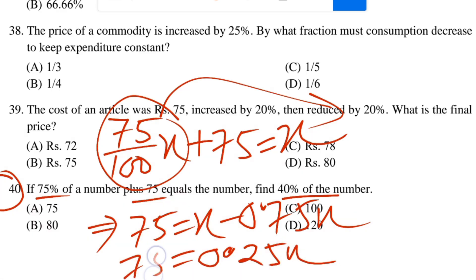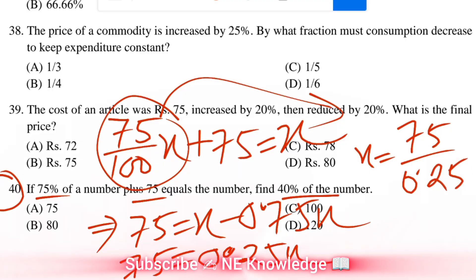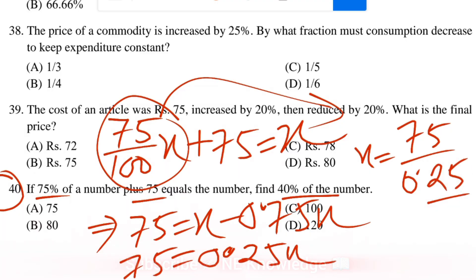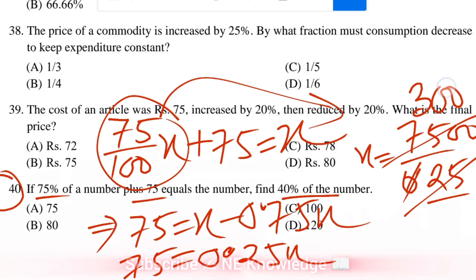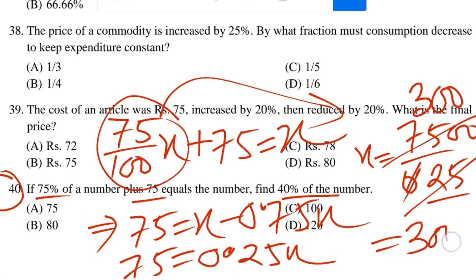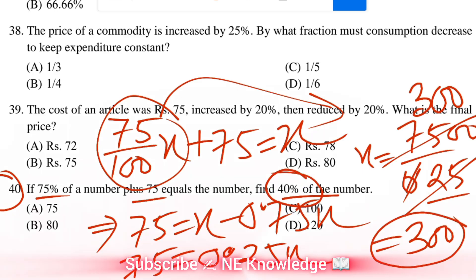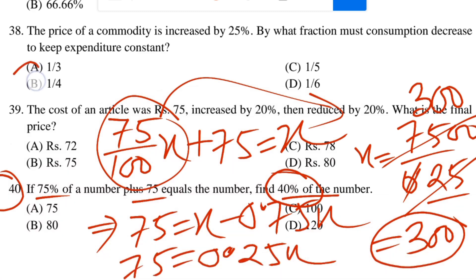X equals 75 divided by 0.25, so x equals 300. Then 40% of the number — 40% of x equals 120.